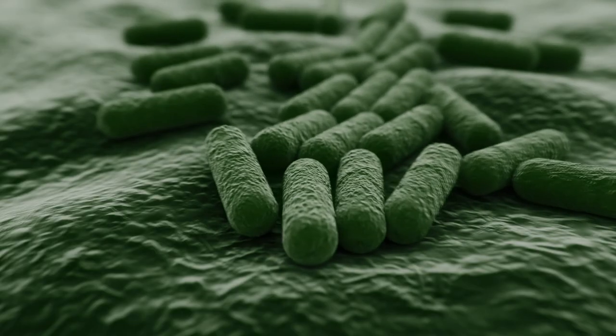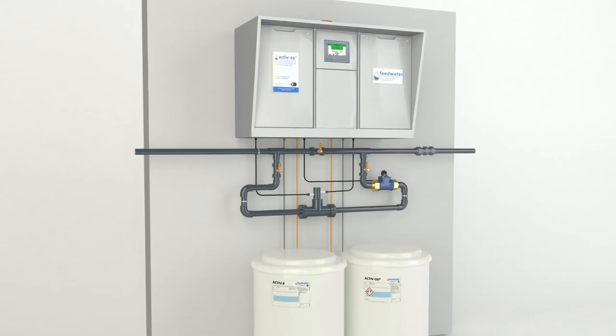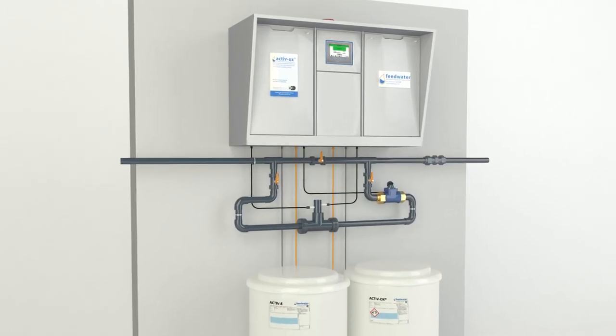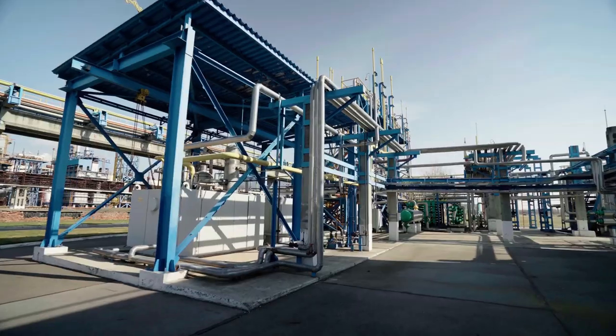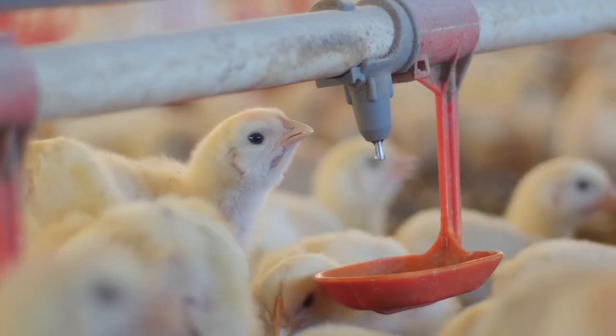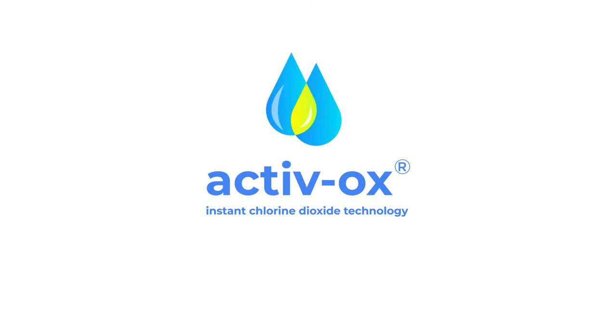But Legionella isn't the only application Activox is suited to. Installed in hundreds of locations across the UK and around the world, Activox can be found in food and drink processing sites, CIP systems, chemical manufacturing plants, poultry farms, and many more due to its simplicity and versatility.